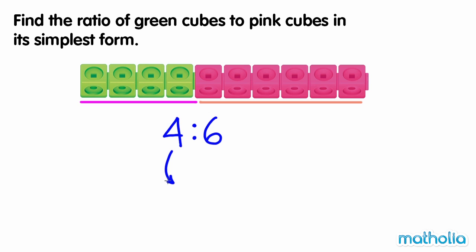Let's divide both parts by 2. 4 divide 2 equals 2. 6 divide 2 equals 3. 4 to 6 is equal to 2 to 3. This is the simplest form. So the ratio of green cubes to pink cubes is 2 to 3.